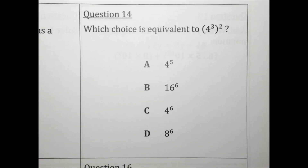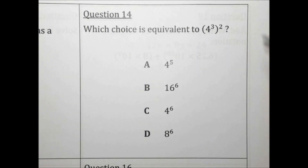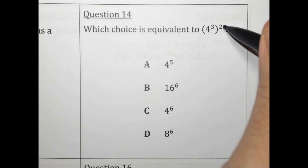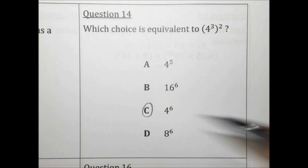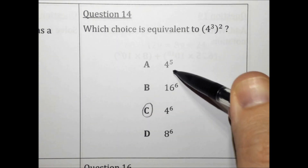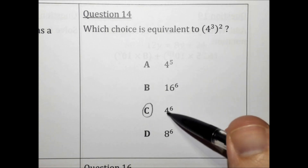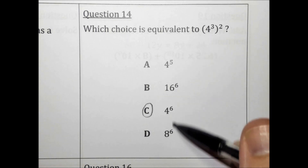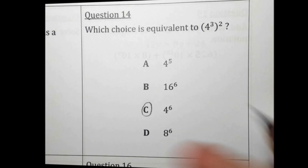Which choice is equivalent to (4 to the third) squared? When you have a power to a power, you just multiply the exponents. 3 times 2 is 6. The answer is 4 to the 6th, choice C. You could also verify this on your calculator — the only choice with the same value as the original expression is choice C.